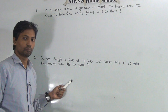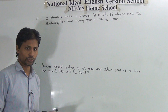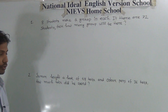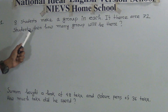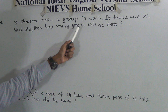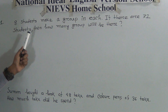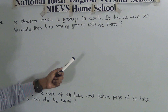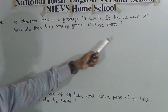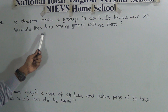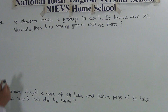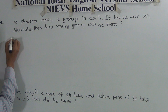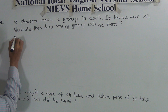Let's look at question number one. 80 students make a group — that means 80 students make one group. If there are 72 students, then how many groups will there be? Okay, let me solve this now.